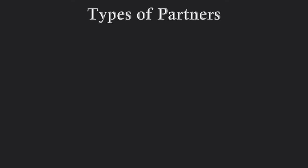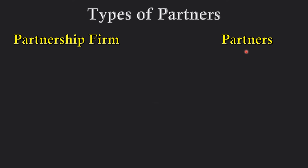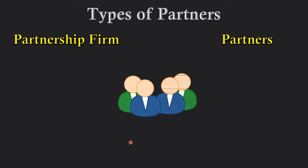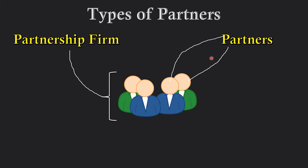Hi guys, welcome back to my channel. I am Kritika and our today's discussion is on the topic types of partners. Before moving ahead, let's do a quick revision: those who join a partnership to do business are individually called partners, all those partners together are called a firm, and the mutual relationship among all these partners is called partnership.